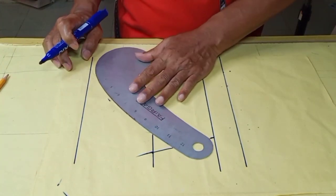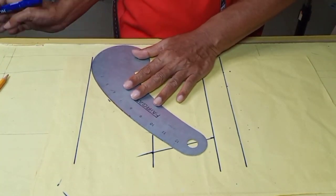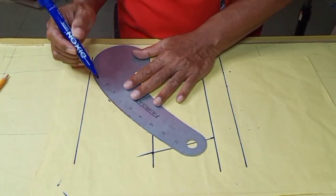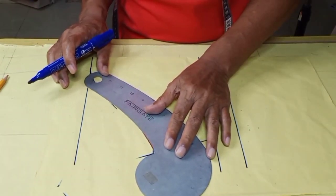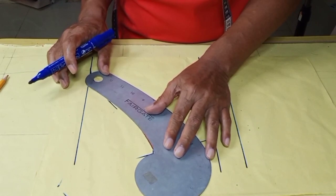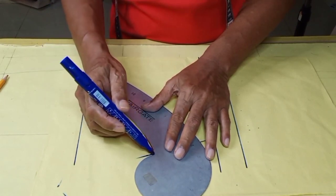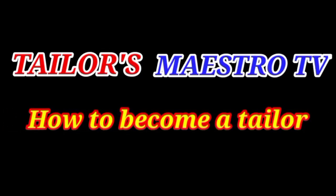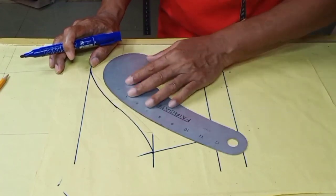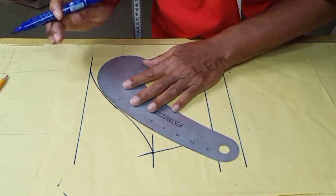Using the French curve, draw lines connecting the marks. Just follow the placement of the curves. Just like this, be sure to have smooth curves. Avoid corners.